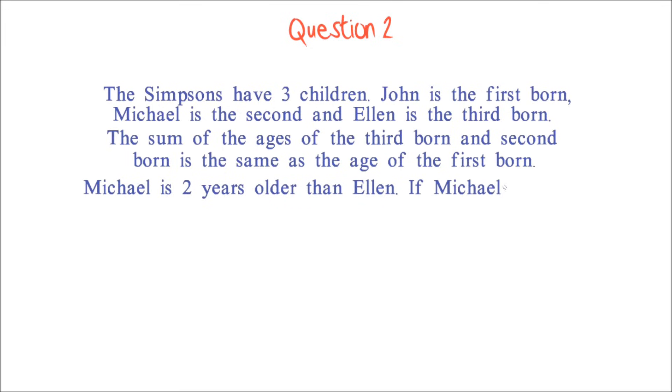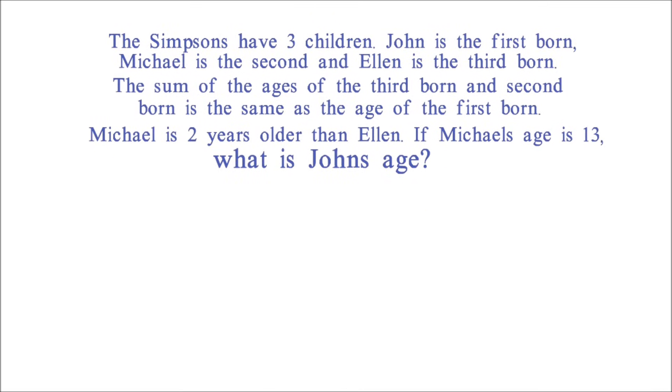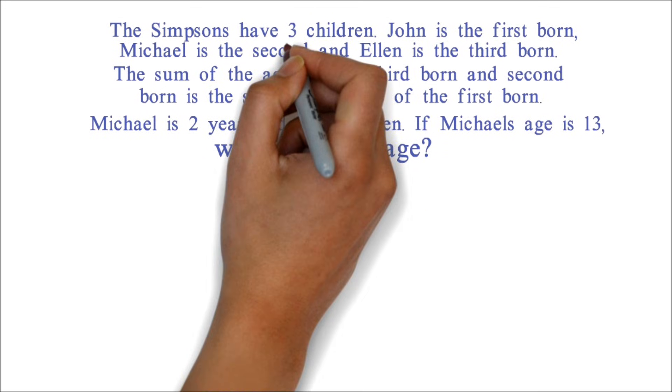Michael is two years older than Ellen. If Michael's age is 13, what is John's age? Here again, your work is to read each sentence and extract the information. First, we know there are three children.